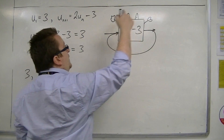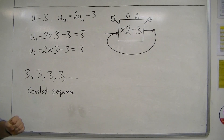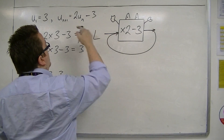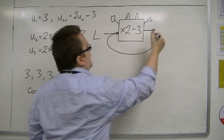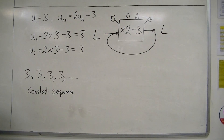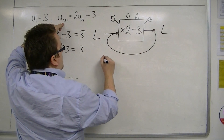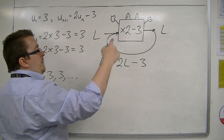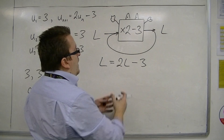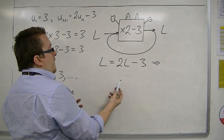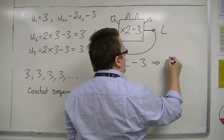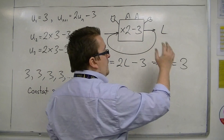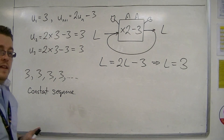The number I'm putting in is exactly the same as the number I'm getting out. That means I could just replace un+1 and un with l. I put in l, I get out l. So if I replace un+1 with l and un with l, then I have an equation I can solve. Taking l from both sides and adding 3 to both sides, I get l = 3. So when the number I put in is 3, it generates a constant sequence.